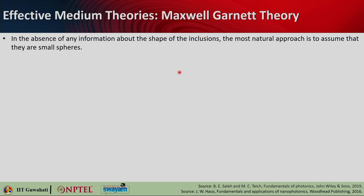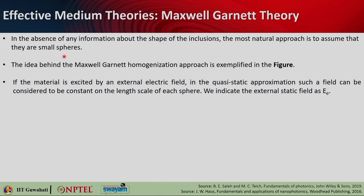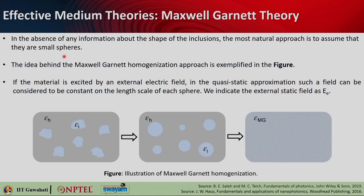If you do not have information about the shape of the inclusion, the natural approach is to assume each of them as very tiny spheres. That is how Maxwell-Garnett homogenization works — you consider each of these inclusions to act as spheres. If the material is excited by an external electric field, in the quasi-static approximation the field on each of these tiny spheres will be static, which is why it is called quasi-static approximation. The external field is denoted as E_E.